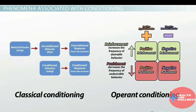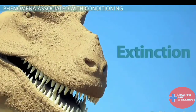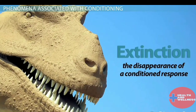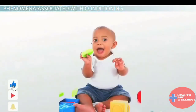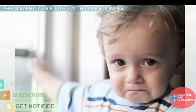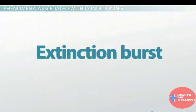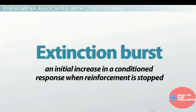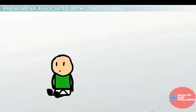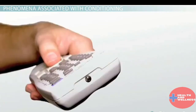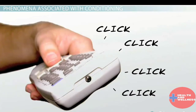Now that you understand classical and operant conditioning, let's examine a few terms associated with behavioral conditioning. Extinction refers to the disappearance of a conditioned response — it weakens and eventually disappears due to removal of reinforcement or punishment in operant conditioning, or removal of a paired stimulus in classical conditioning. An example would be a child no longer throwing a fit after their parents stop giving them what they want. Extinction burst refers to an initial increase in the conditioned response when reinforcement is stopped — the behavior increases before extinction begins to weaken it. Think of pushing a button on a remote that doesn't work: your immediate reaction is to push it again and again. This is an extinction burst.